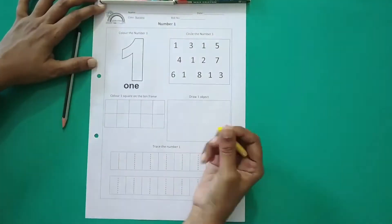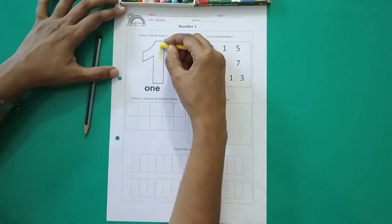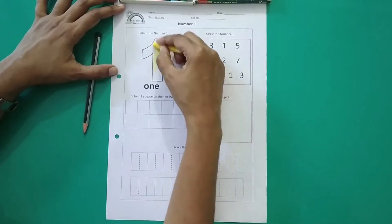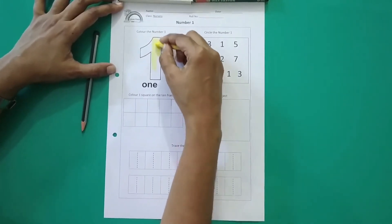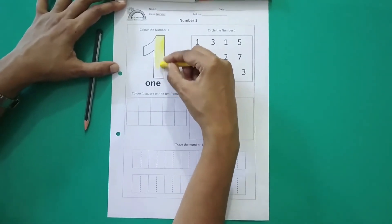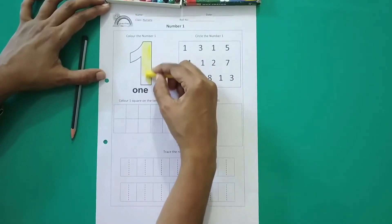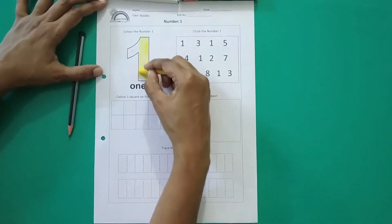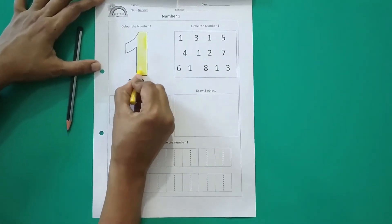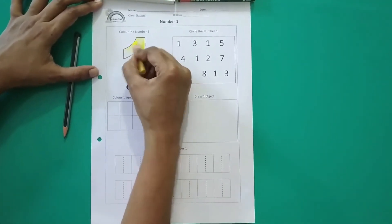Now I will take, should I take yellow color? Yes. And then we will start coloring the number 1. Which number are we coloring? 1. You remember 1 is like a standing line. Try not to go out of the line. Line se bahar mat jao, line ke andar hi color karna hai. You have to do this very slow and very neatly. Jaldi jaldi nahi karna hai. So this is how we color the picture of 1.